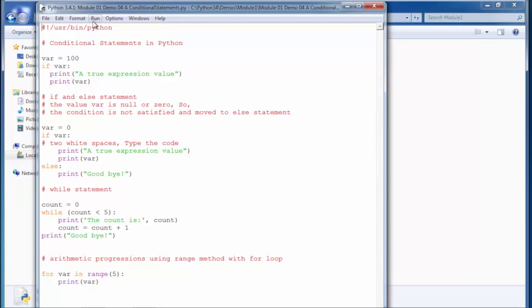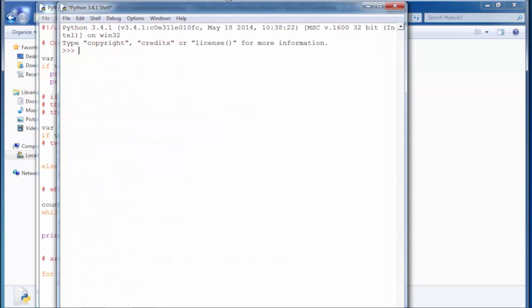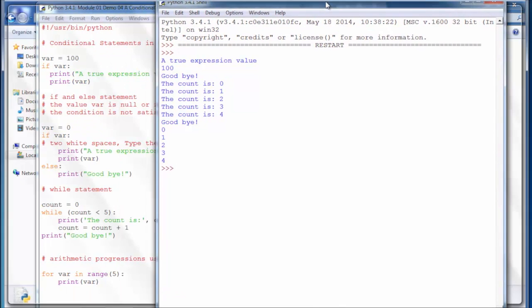Now run the program and see the output. Looks like the variable var is 100, so the true expression value statement is printed. In this case, the var value is zero, so it will say straightaway goodbye.